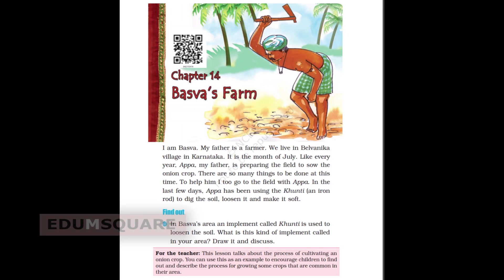Baswa's Farm. I am Baswa. My father is a farmer. We live in Balvaniga village in Karnataka. It is the month of July. Like every year, Appa, my father, is preparing the field to sow the onion crop. There are so many things to be done at this time. To help him, I too got to go to the field with Appa.